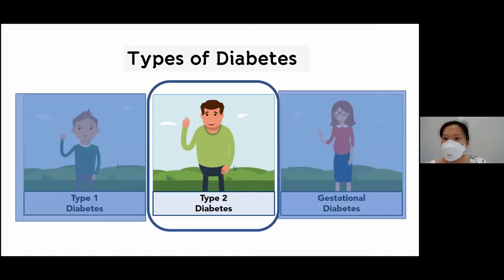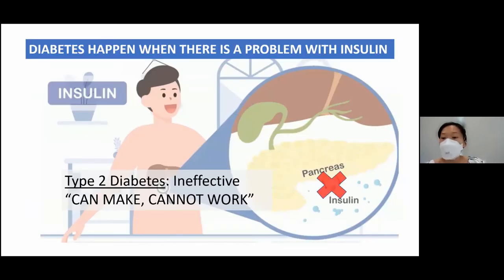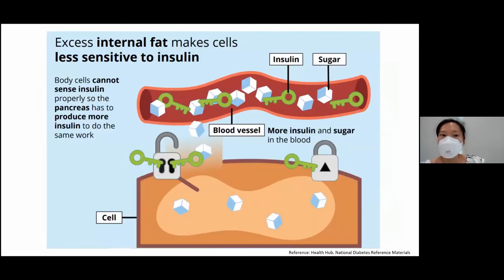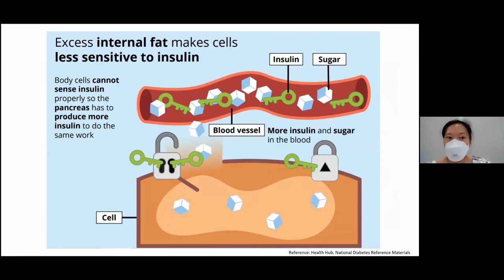Let's look at type 2 diabetes, which is the most common subtype and what we commonly refer to as Tang Yaobing or diabetes. In type 2 diabetes, there is a problem with insulin — we can make insulin in our body, however this insulin cannot work properly and is very ineffective. Many patients with type 2 diabetes are overweight or obese, resulting in excess internal fat which makes the body's cells less sensitive to insulin. As a result, the pancreas has to produce more insulin to do the same amount of work.